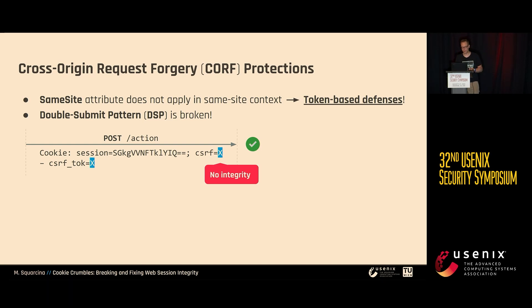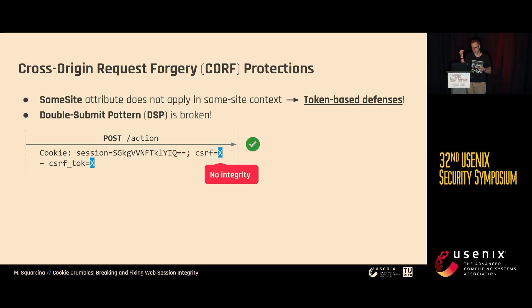We talk about tokenization protections. The most common one is the double submit pattern because of its stateless nature. The idea is simple: you have an authenticated request with a cookie — say CSRF=X — and you attach a matching post parameter. If the cookie value and parameter value match at the server side, the request is accepted. The problem is that the cookie has no integrity against the same-site attacker. The attacker can do cookie tossing, overwrite that cookie, and this pattern is easily broken.